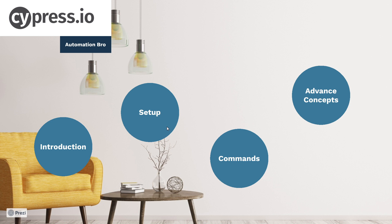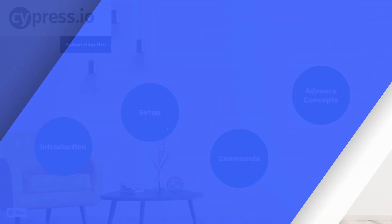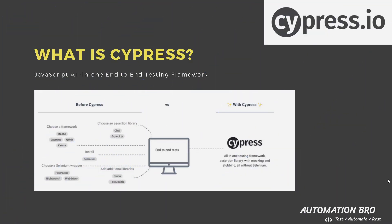Now let's dive into some details and talk about what Cypress is. Cypress is a JavaScript all-in-one end-to-end testing framework. Unlike many other frameworks, Cypress comes with all the features built in for you to start doing browser automation. You just need to run one command to install Cypress, and once installed you will have access to a testing framework, assertion library, as well as mocking and stubbing included.